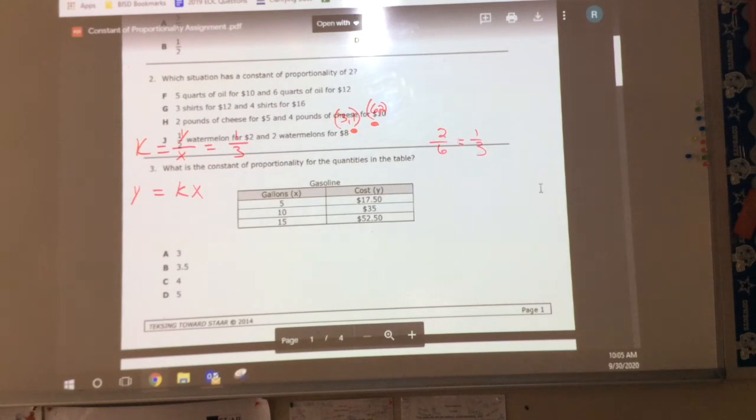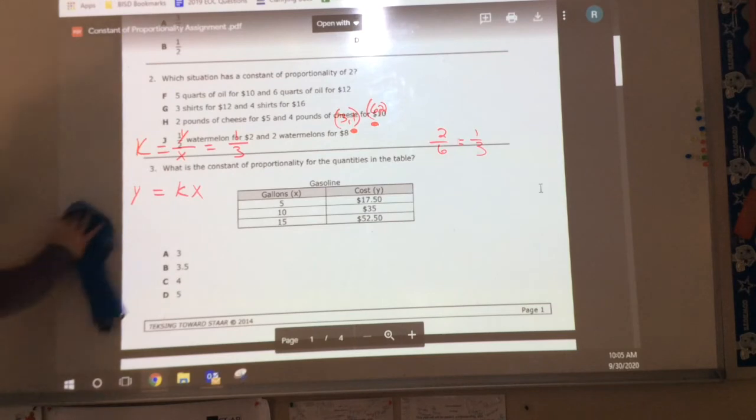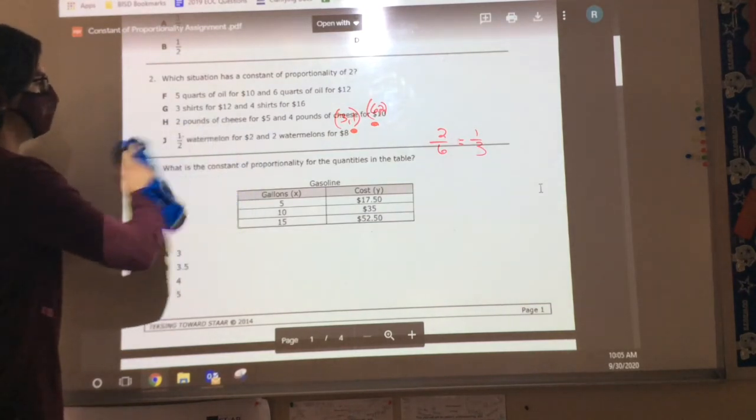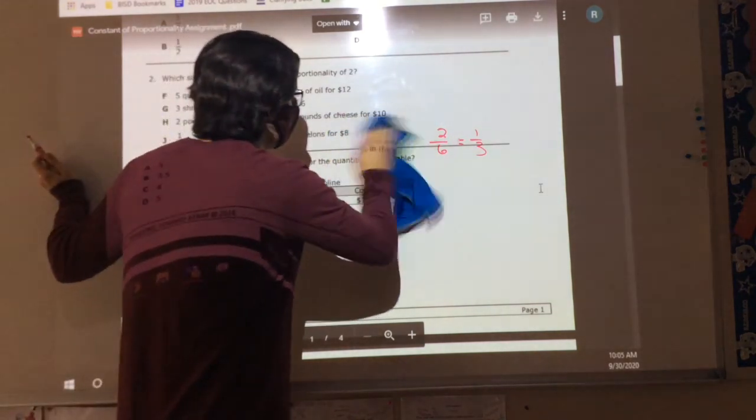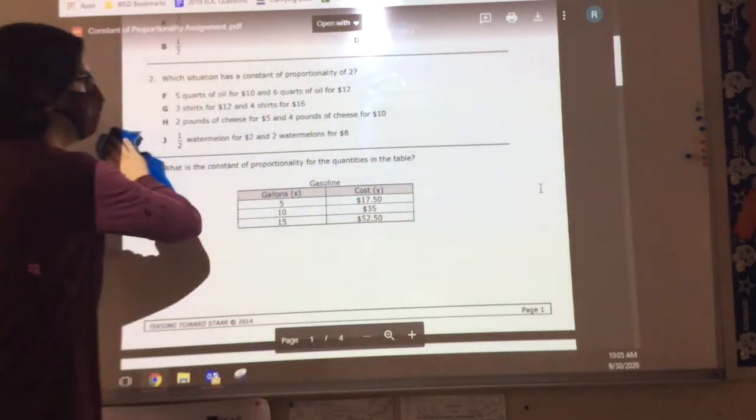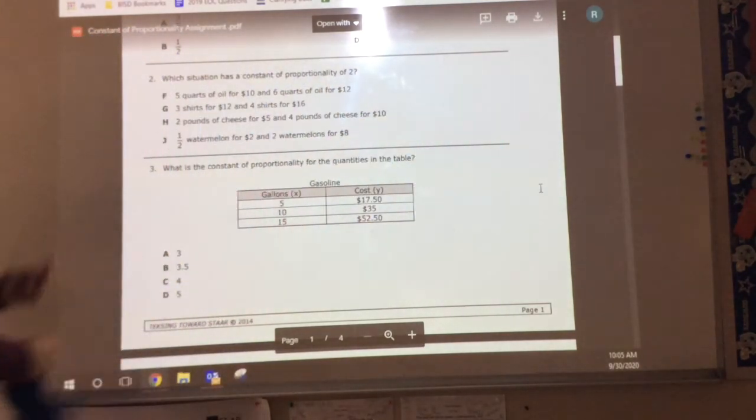All right, this one says, which situation has a constant of proportionality of 2? Which has a constant of proportionality of 2? Now, notice it doesn't give you a table or a graph here.